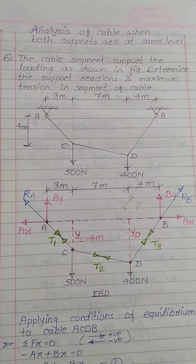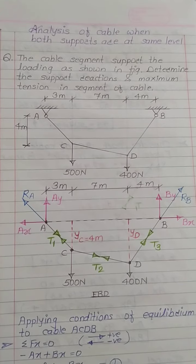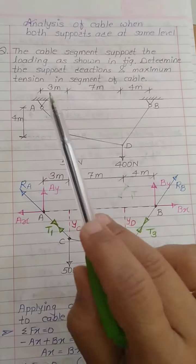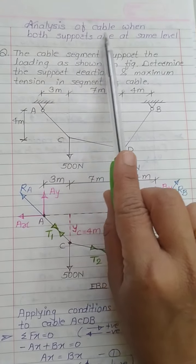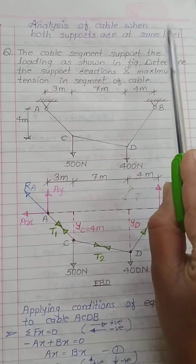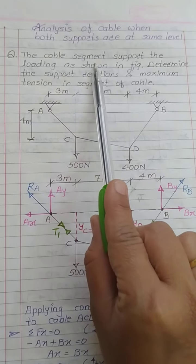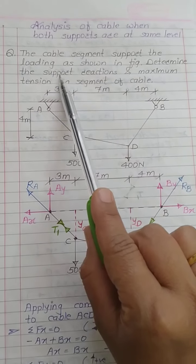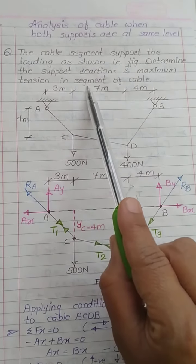Hello everyone. In this video I will explain how to analyze cables with reference to one example. The type of numerical is analysis of cable when both supports are at the same level. We'll see the numerical directly: the cable segment supports the loading as shown in the figure; determine the support reactions and maximum tension in the segment of cable.